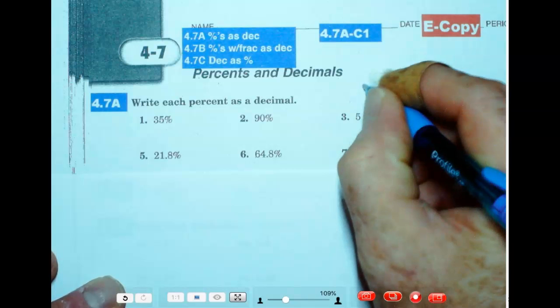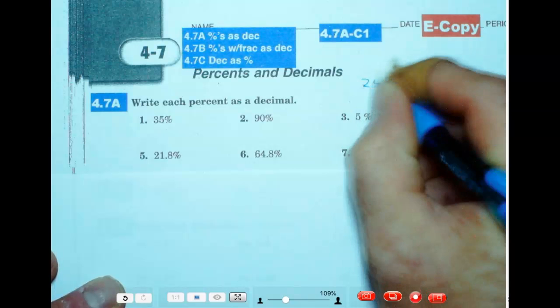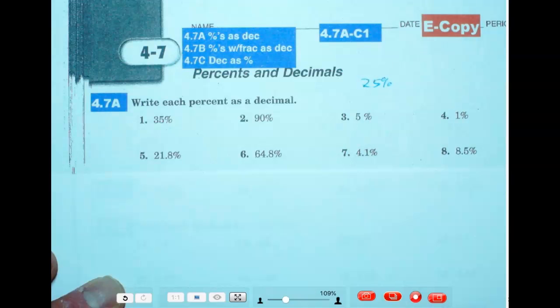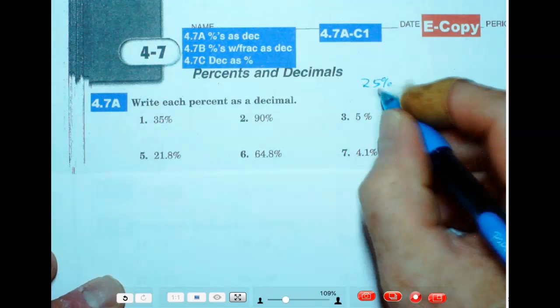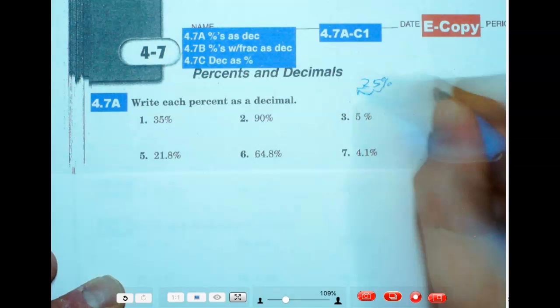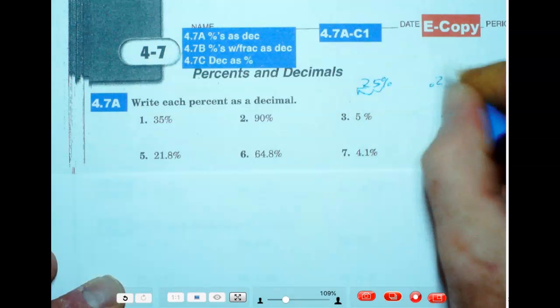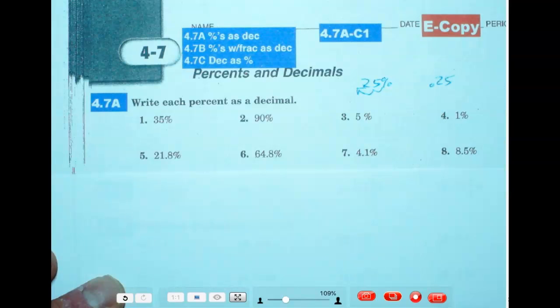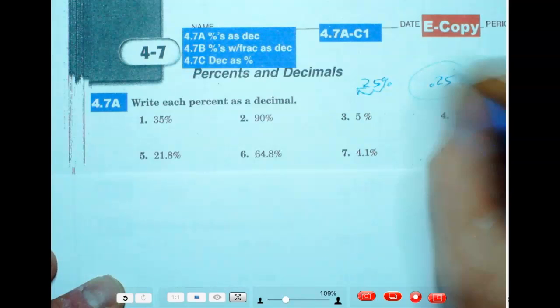So if we have 25 percent as our benchmark, we know that we can move that decimal two places. We can divide by 100, and we'll get back to 0.25. And that's where we're going to stop today. There's our decimal.